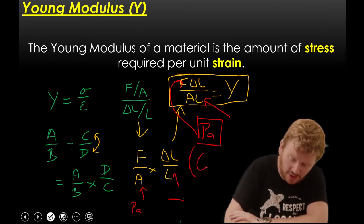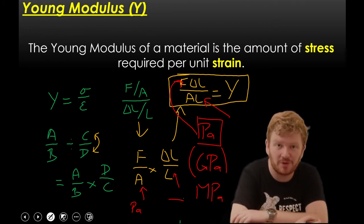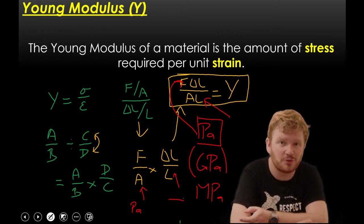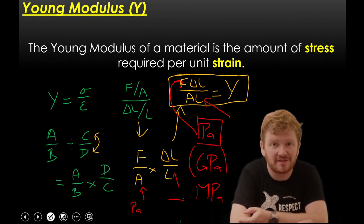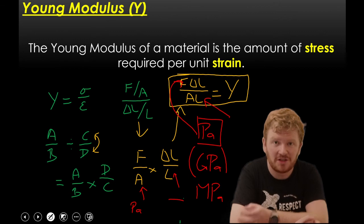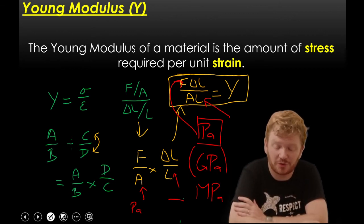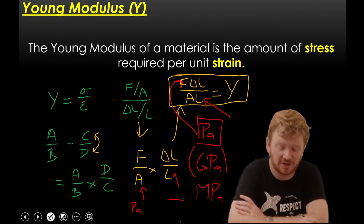Now, in practice, we tend to use Giga Pascals, or Mega Pascals, because most materials, if you think about what this is saying, it's saying how much force we need to get quite a significant amount of extension. So, you would need a huge amount of force to get the extension, because you're essentially saying how much force is required to turn a one meter squared, one meter long cylinder, into two meters long. And that's quite a lot of force. So, usually, you find that those units are very, very high.